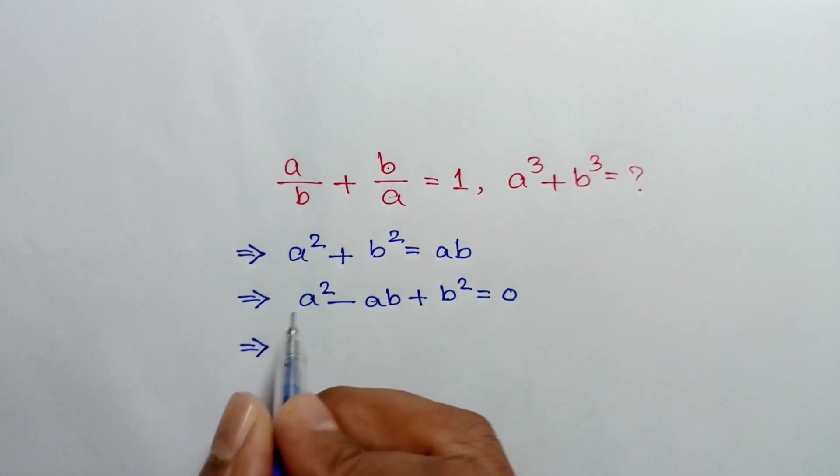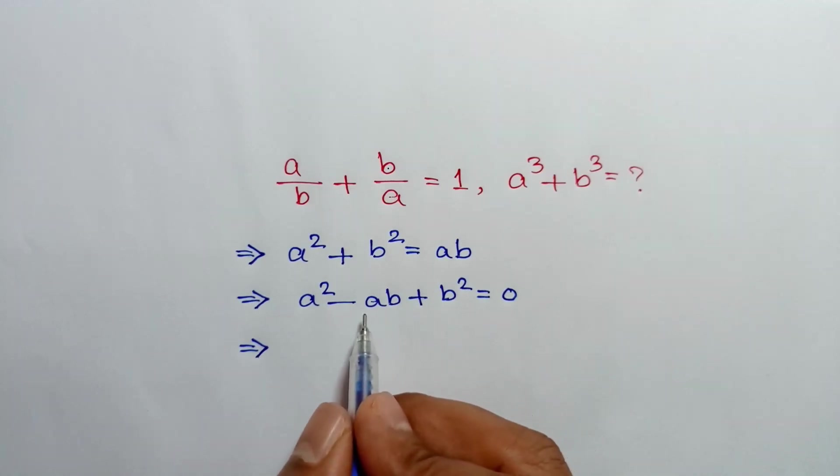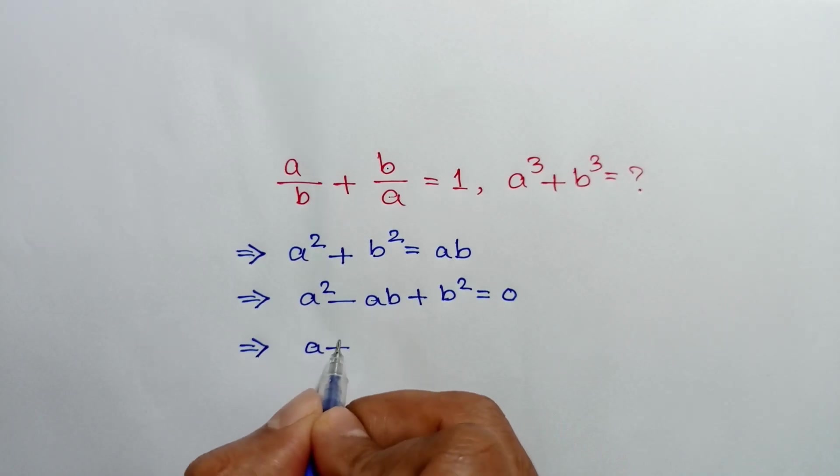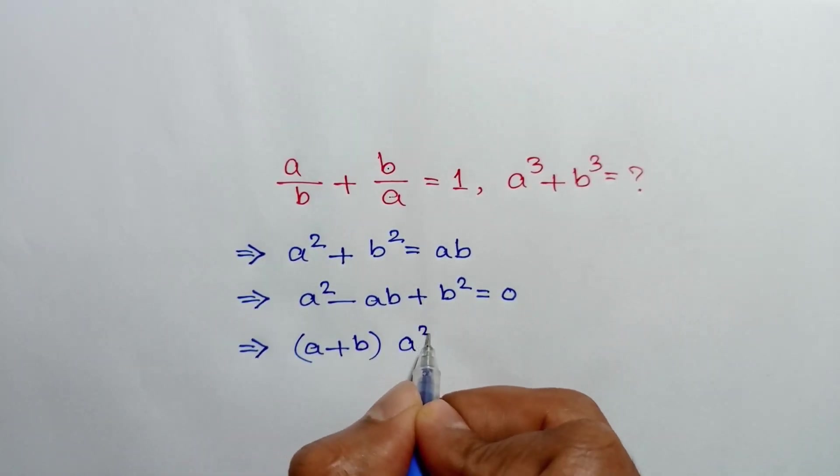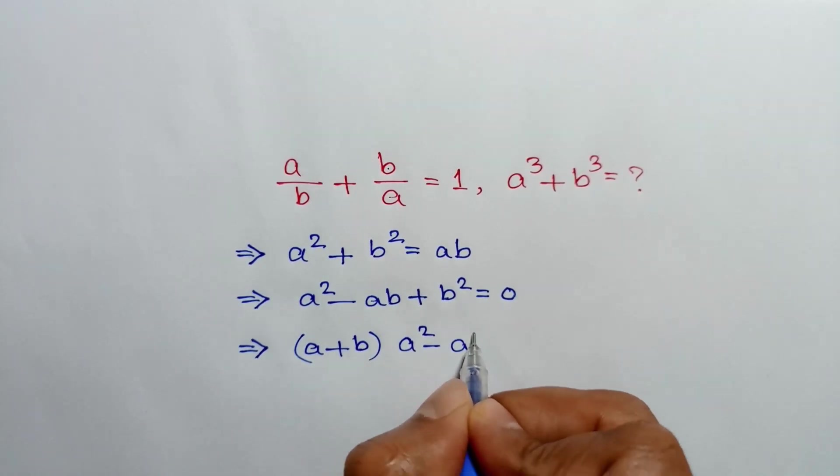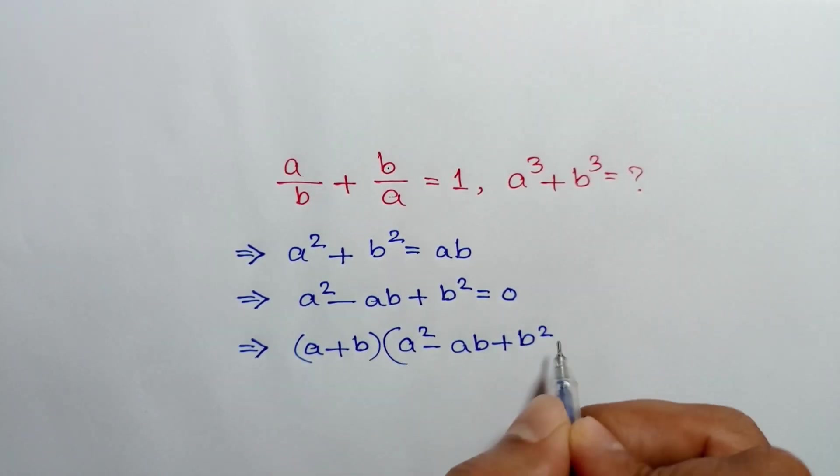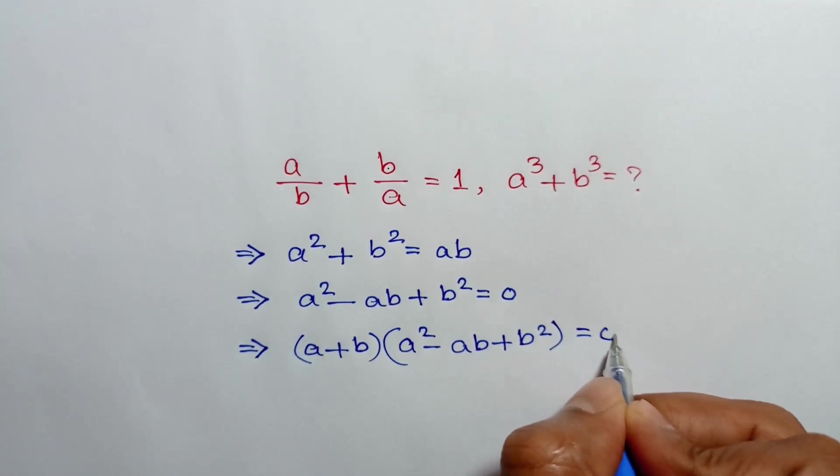Multiplying both sides by a plus b, we can write a plus b times a square minus ab plus b square is equal to zero.